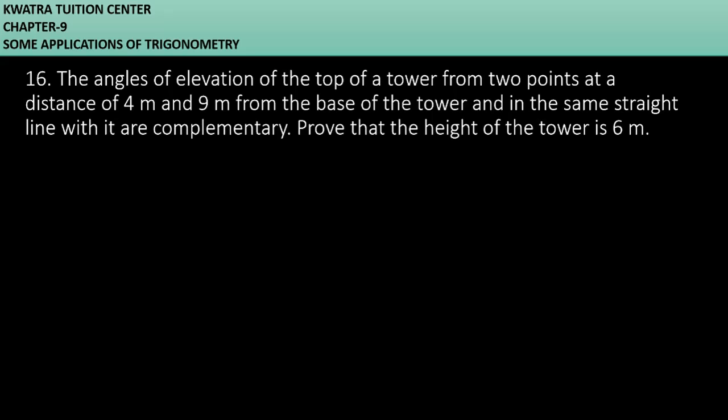Here we have information that there is a tower and we have two angles of elevation. One is 4 meter, the distance is 4 meter. The other angle of elevation is 9 meter, and we don't know both angles. But one information is given that both are complementary.